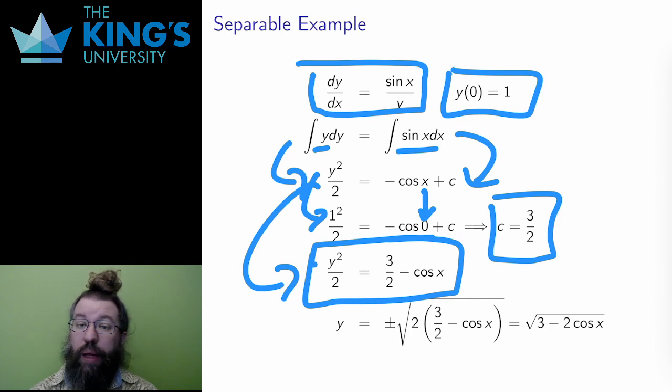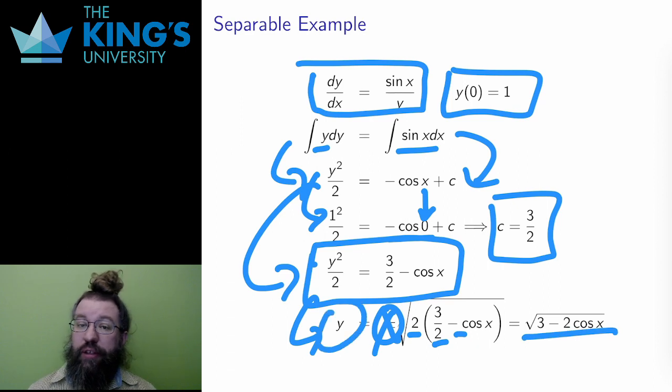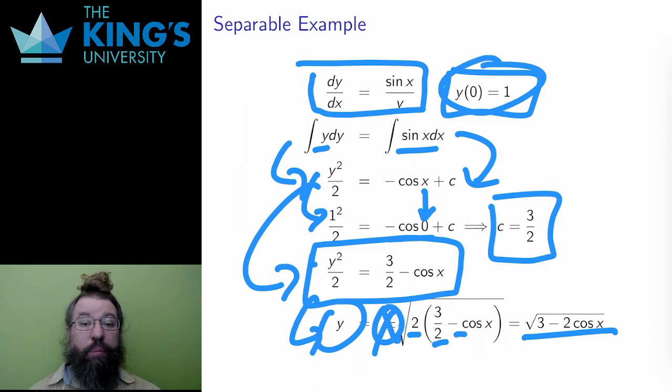To do this, I multiply both sides by 2 and then take a square root. I can simplify a little bit on the inside of the square root by multiplying the 2 into the other terms. Also, I can drop the plus-minus that would normally accompany the square root. Why can I do this? Well, the initial condition tells me that y is positive, y = 1. That means that the output of the square root must be positive, so I use the positive square root. This is the solution to the IVP, solved as a separable equation.